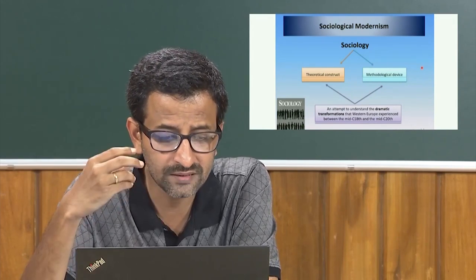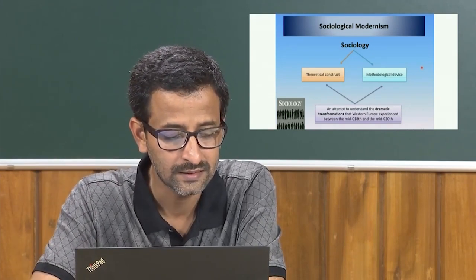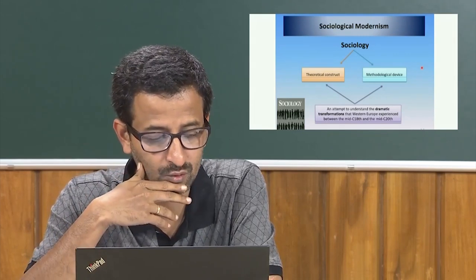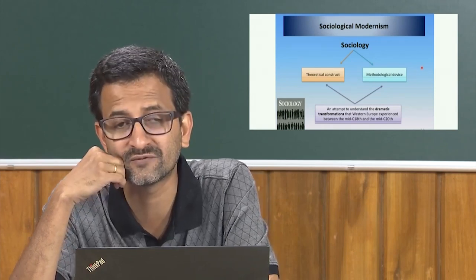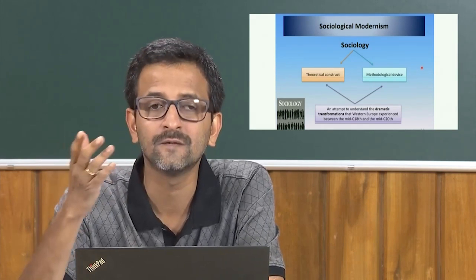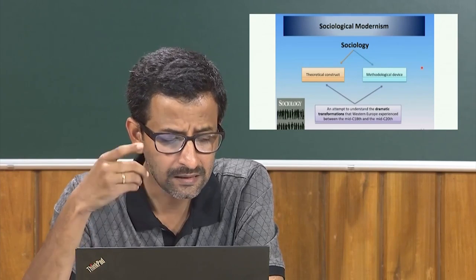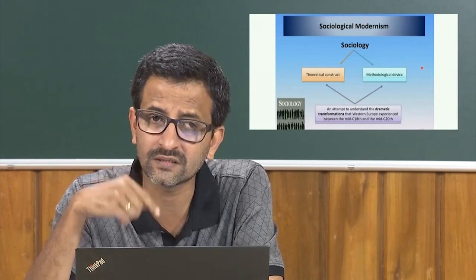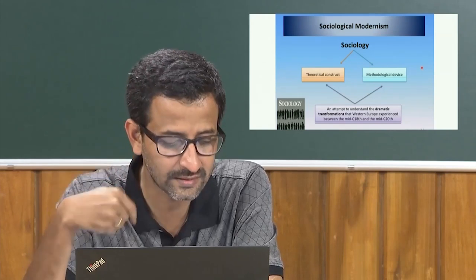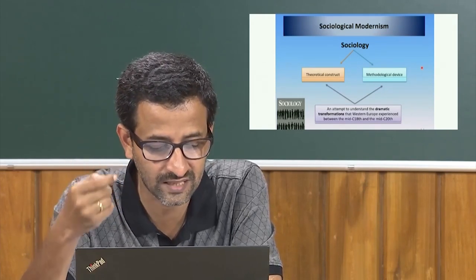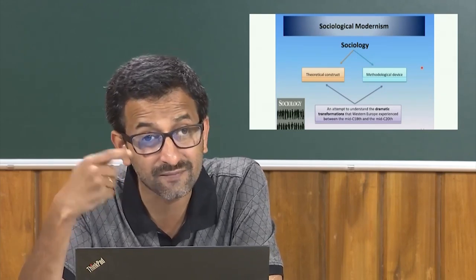Sociology, both as a mode of thinking and as an academic discipline, came into existence as an attempt to understand the dramatic transformations that Western Europe experienced between the midpoint of the 18th century and the midpoint of the 20th century — that is, 1750s to 1950s. We must remember that these descriptions and the categories they use are themselves products of this attempt to understand them. The concepts we use to understand modernity are themselves modernist ones.